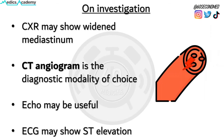Chest x-ray may show a widened mediastinum, however the modality of choice for diagnosing aortic dissection is CT angiogram. ECHO may also be useful, particularly when there is aortic regurgitation, and ECGs may show ST elevation in a minority of patients.